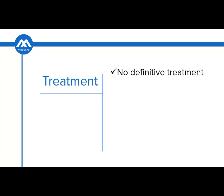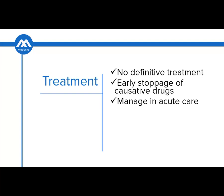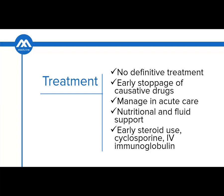What is the treatment of Steven Johnson syndrome? Basically, there is no definitive treatment for this syndrome, but early stoppage of the causative drugs which led to the development of this syndrome before the development of bullae is important. You will also need to manage these patients in an acute care setting such as an intensive care unit, with fluid and nutritional support. Early steroid use and cyclosporine use together with intravenous immunoglobulin are also used.